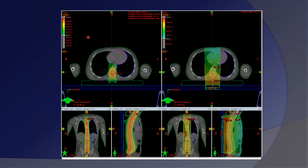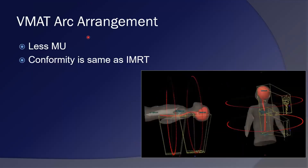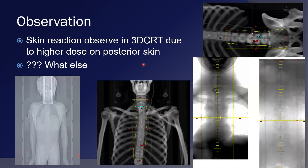For VMAT, you can use two to three arcs: two arcs for the brain, and one arc each for the upper and lower spine if required. An avoidance sector can be selected for the anterior portion when the gantry moves anteriorly, so there is no dose distribution anteriorly. The advantage of VMAT over IMRT is fewer monitor units while maintaining the same conformity as IMRT. Skin reactions from 3D CRT are observed due to higher doses on the posterior skin.